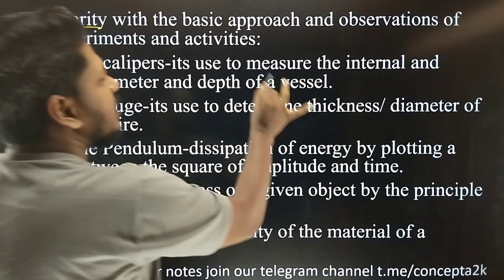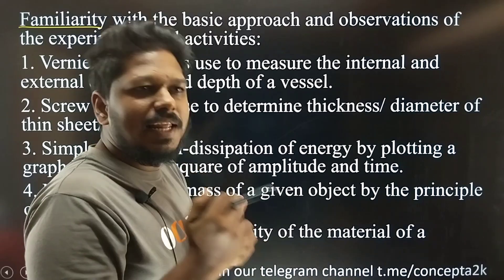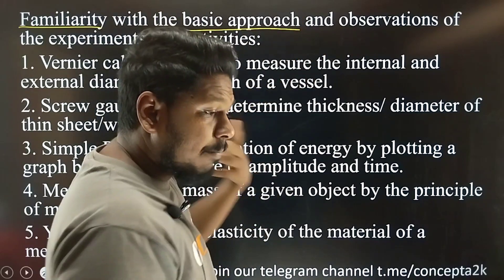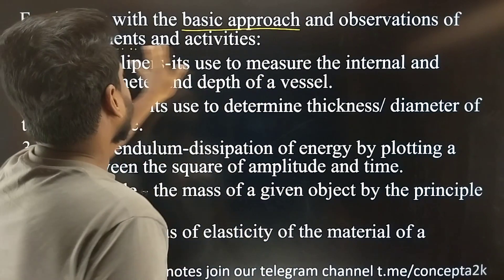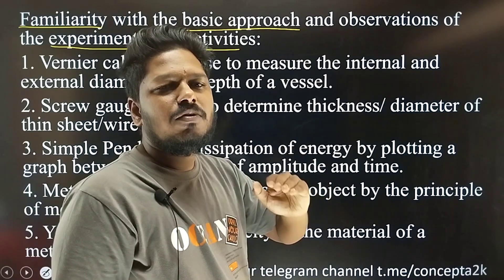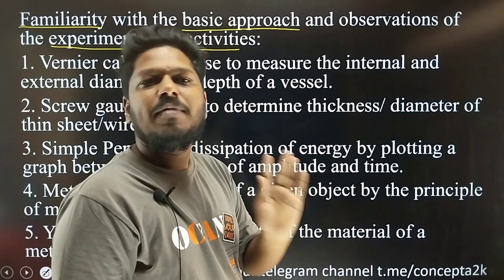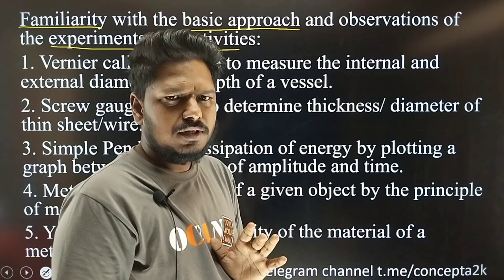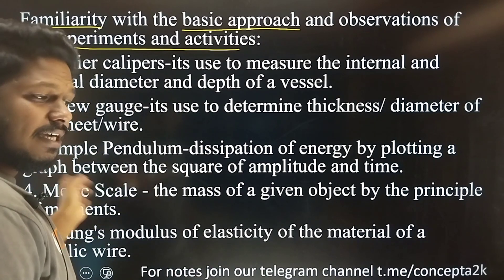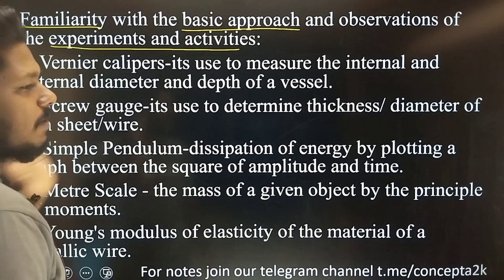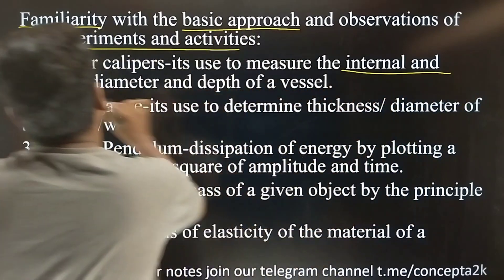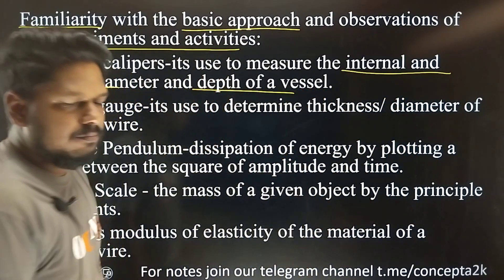Familiarity with the basic approach — so you need to be familiar. What does the basic approach involve? What observation is, what an experiment is — it's an activity. It has to cover all activities in the CBC. In the vernier caliper, how does it measure internal and external diameter? How does it measure the depth? These are the three issues.